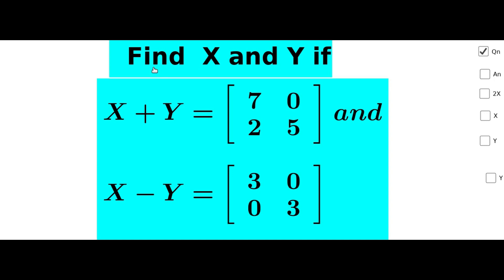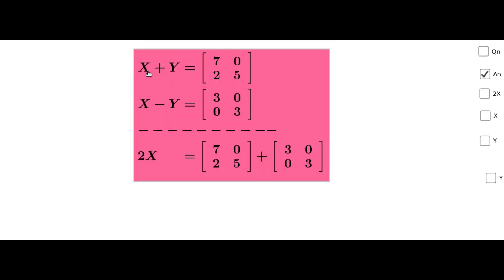Next question: find X and Y if X+Y = matrix [7, 0; 2, 5] and X-Y = matrix [3, 0; 0, 3]. Here X and Y are matrices, so we have to find the matrix elements. We add these two given equations.